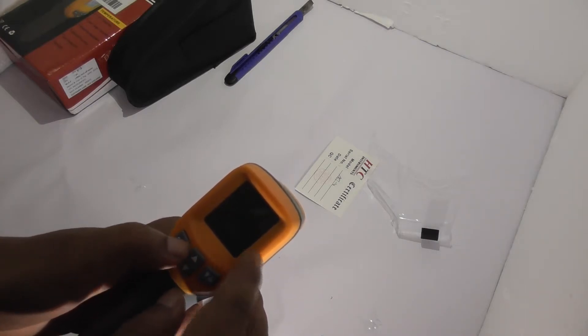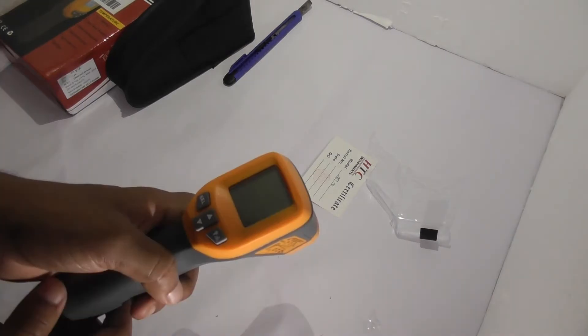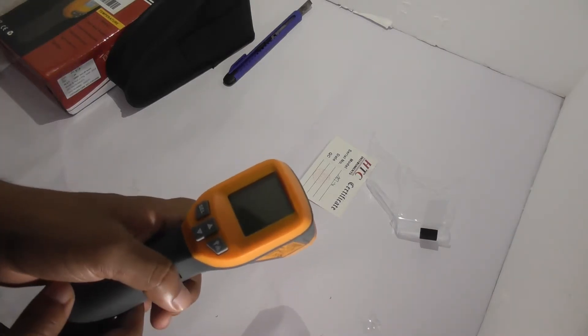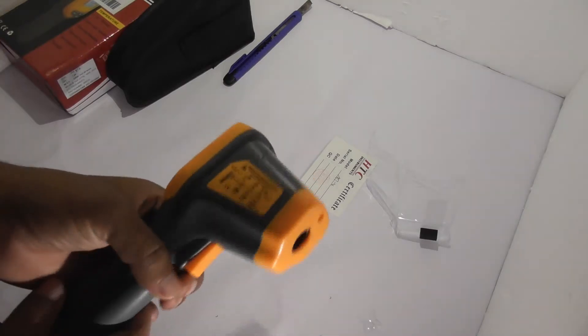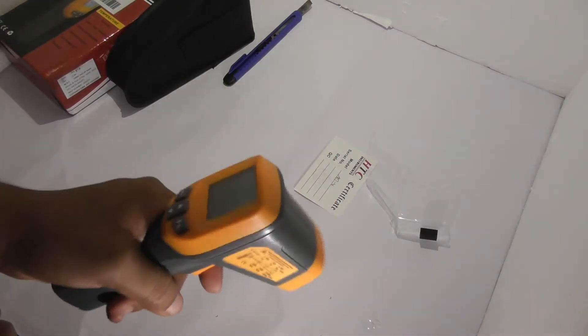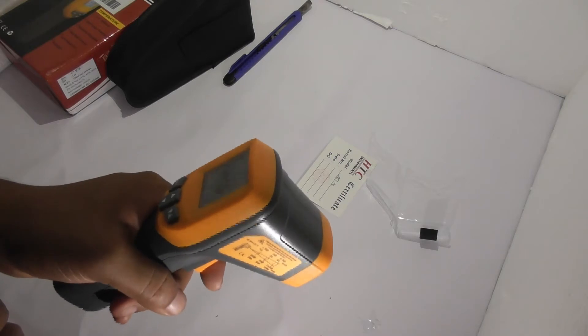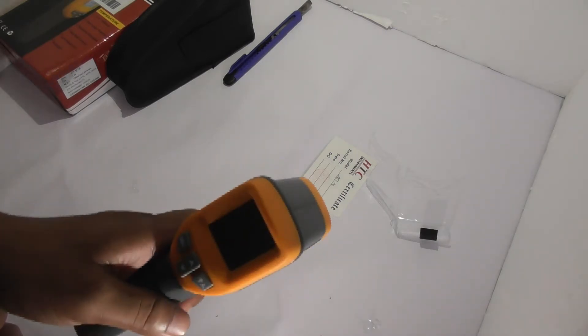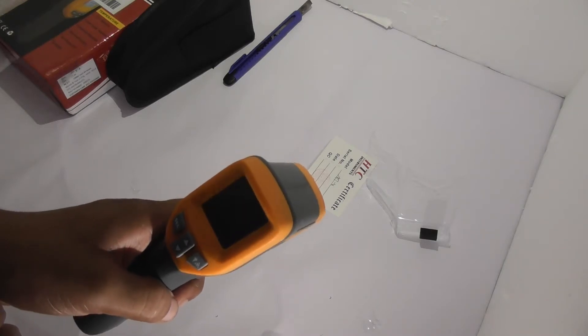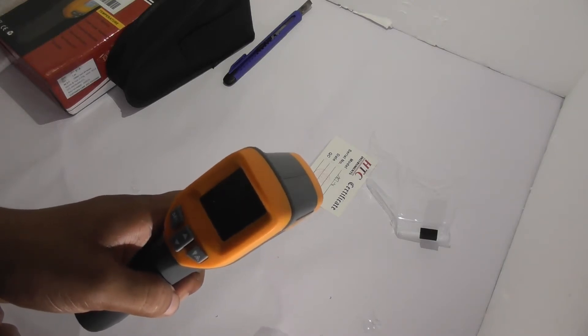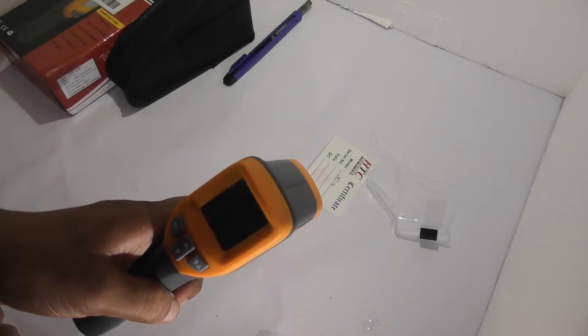I'm going to show you the operating instructions. Step one: hold the meter by its handle and grip, and point it toward the surface to be measured. Step two: pull and hold the trigger to turn the meter on, and the scan icon will appear and begin testing.